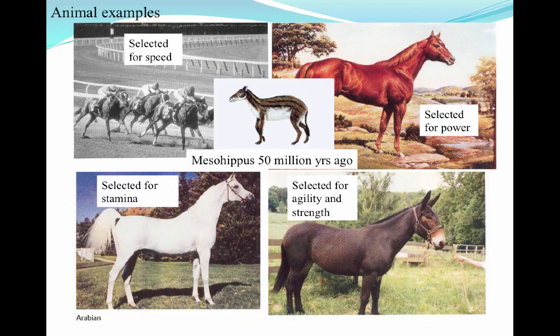Some of the animal examples we see in terms of the history of genetic progress involve the horse species. We've selected horses for a variety of reasons — speed, power, stamina, agility, and strength. All of these different breeds of horses really evolved from Mesohippus, which fossil records indicate was actually roaming earth about 50 million years ago.